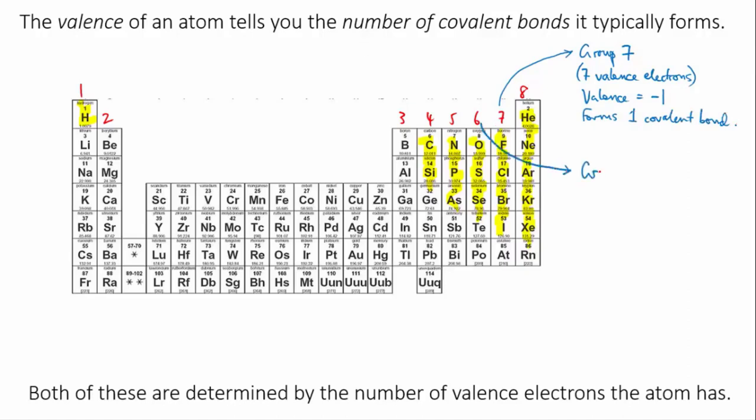Elements in group 6 have a valence of minus 2. They have 6 valence electrons, so they need to gain 2 electrons to get a full outer shell, to achieve a noble gas configuration. These elements typically form two covalent bonds.